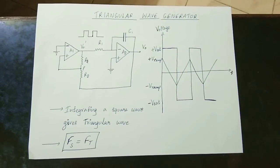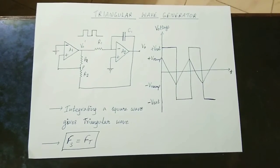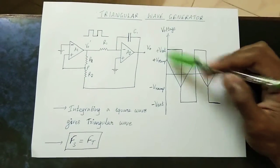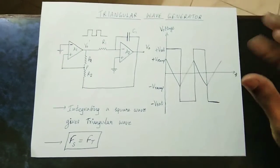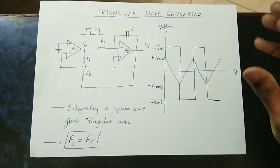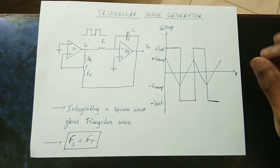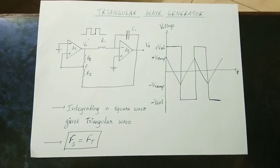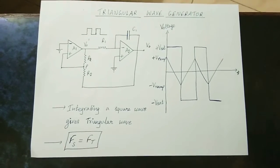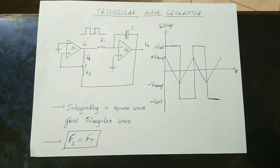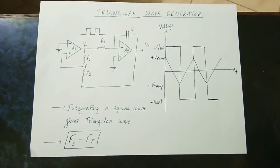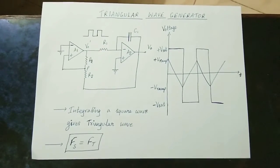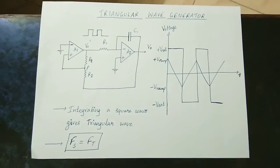From this video, we will talk about the triangular wave generator. A triangular wave is going to be formed. If I control the triangular wave output, it is a very simple way. We will also talk about the square wave in relation to the triangular wave.